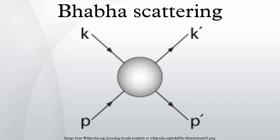Bhabha scattering is named after the Indian physicist Homi J. Bhabha. The Bhabha scattering rate is used as a luminosity monitor in electron-positron colliders.